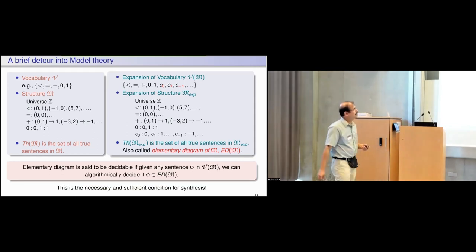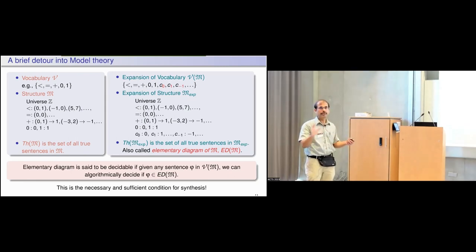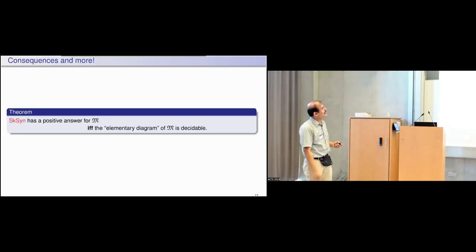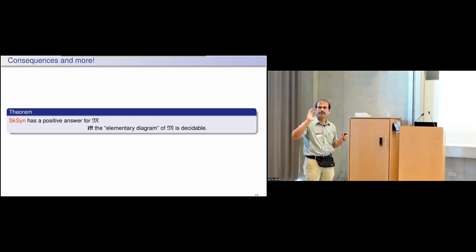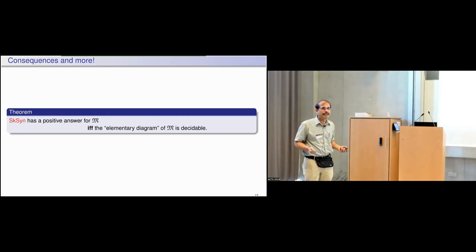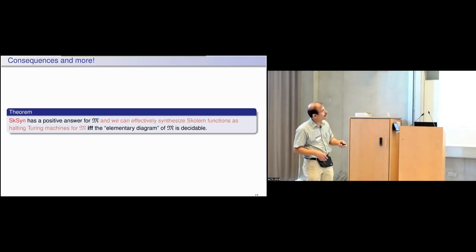This turns out to be a necessary and sufficient condition for synthesis when we are talking about computable structures. The Skolem synthesis problem — given that for every formula there is a Turing machine serving as a Skolem function, can we algorithmically synthesize it? — has a positive answer if and only if the elementary diagram of M is decidable. The proof is constructive, so we can actually effectively synthesize these as halting Turing machines.